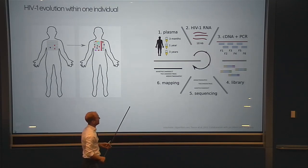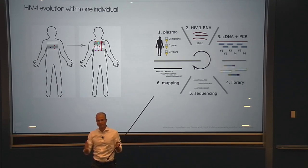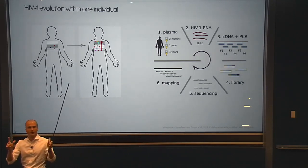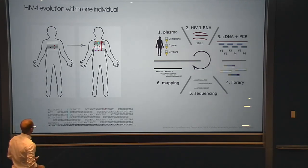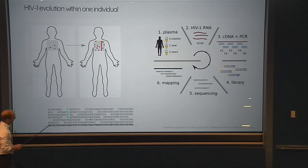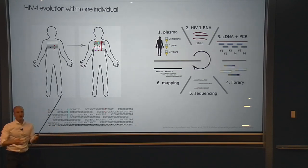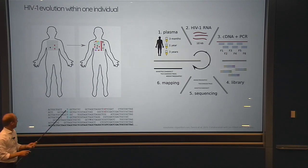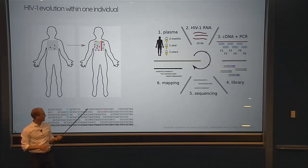Modern sequencing machines give millions to hundreds of millions of these snippet reads. You pile them up so they nicely align, and you can see parts of the genome that have changed — for example, a mutation present in two out of seven reads would appear as a small fraction of the reads at that position.